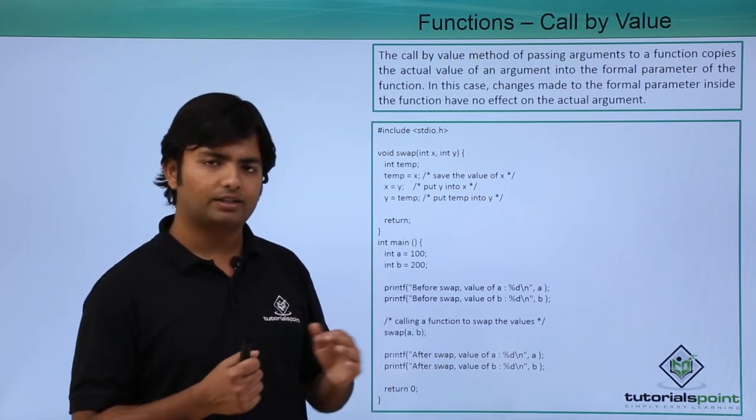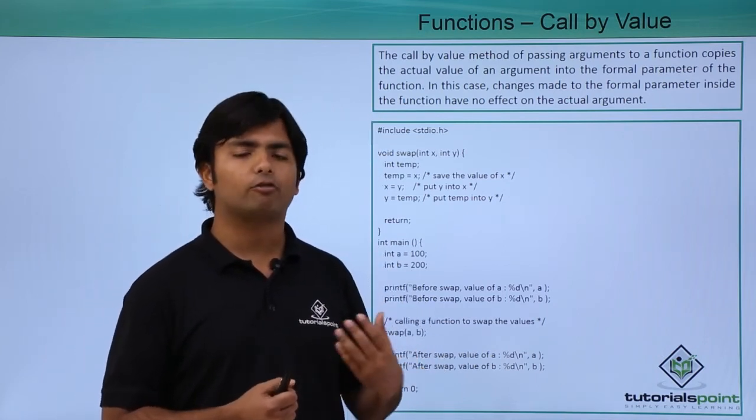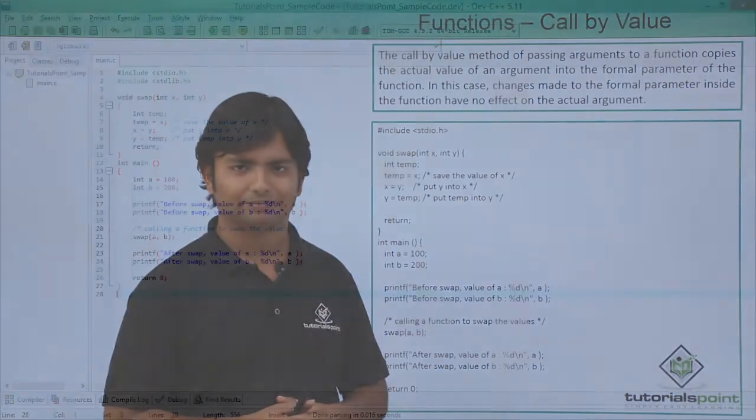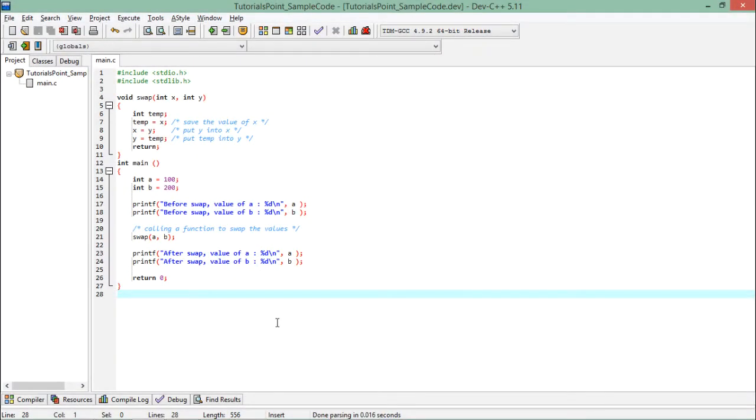So let's see a practical implementation of call by value in methods. So here in call by value, you can see it's the same example which we have already seen in the presentation. There is a swap method which will take two numbers in arguments like int x and int y. So whenever I will call this particular method, I will pass the value itself. So the value from a and b will get copied in the x and y respectively.